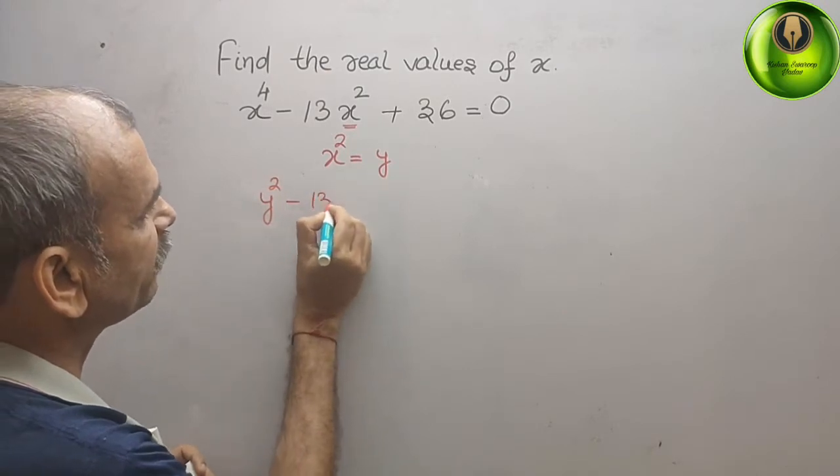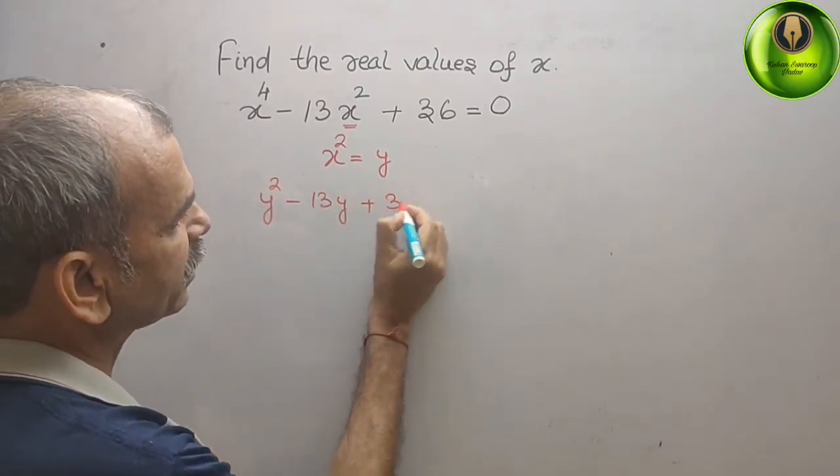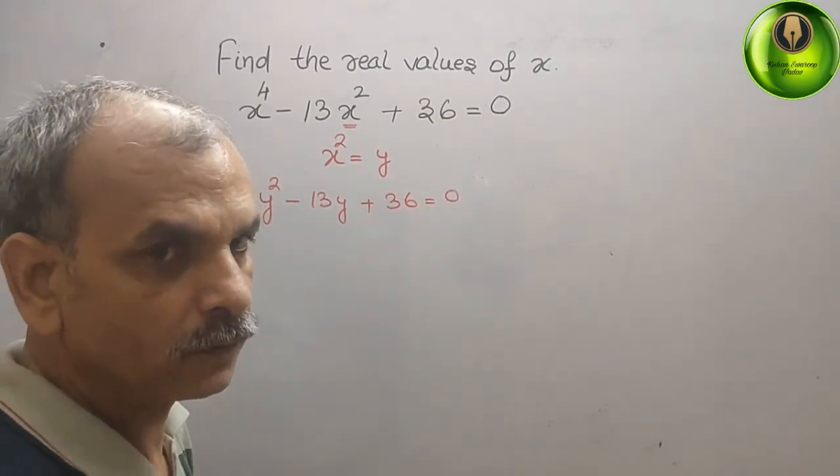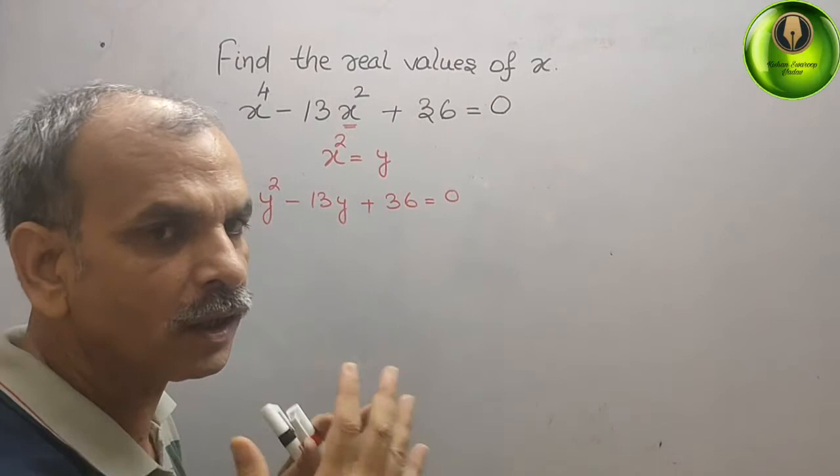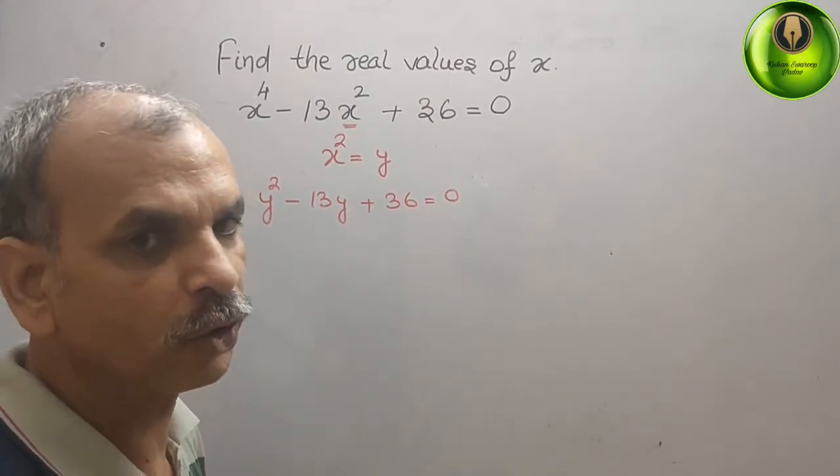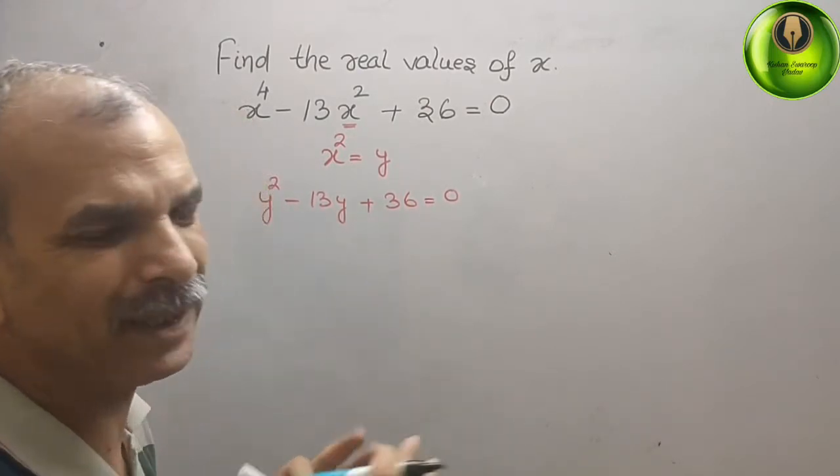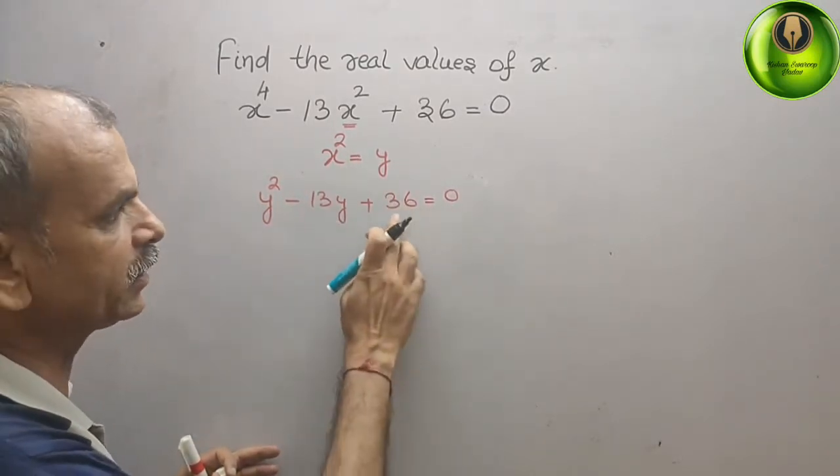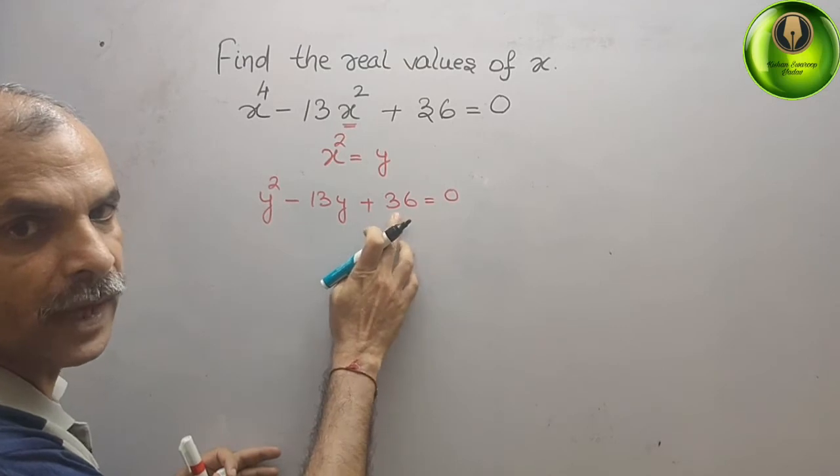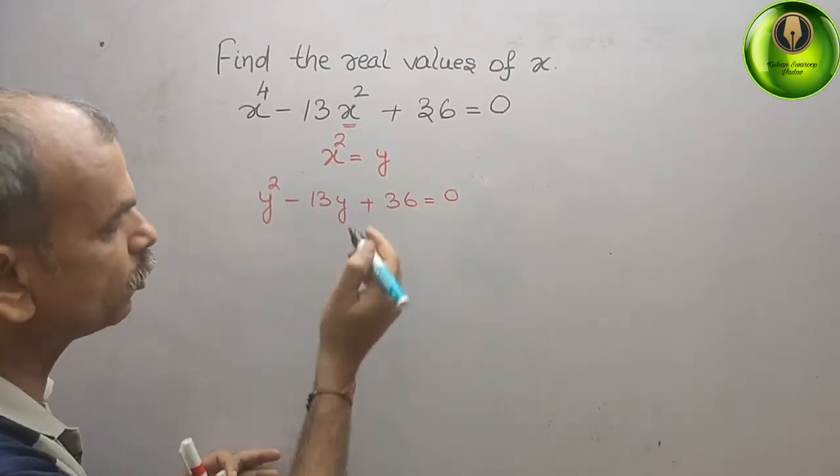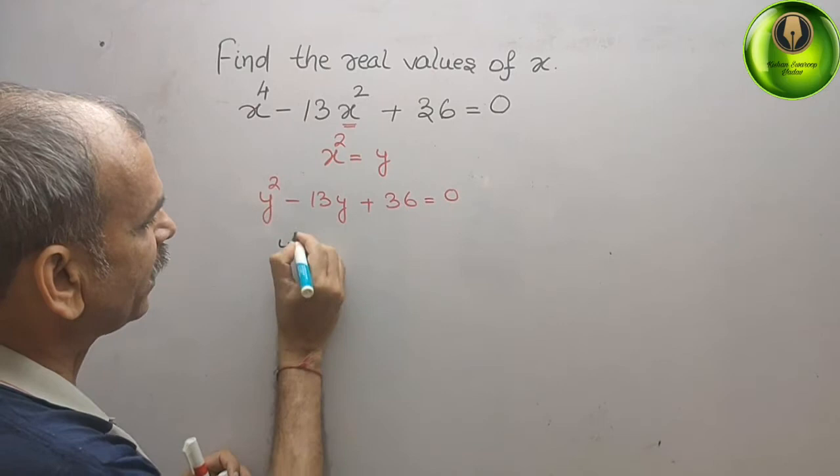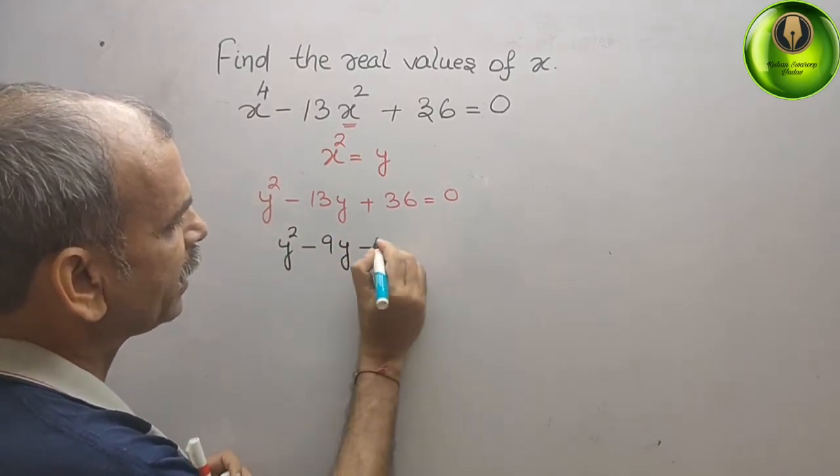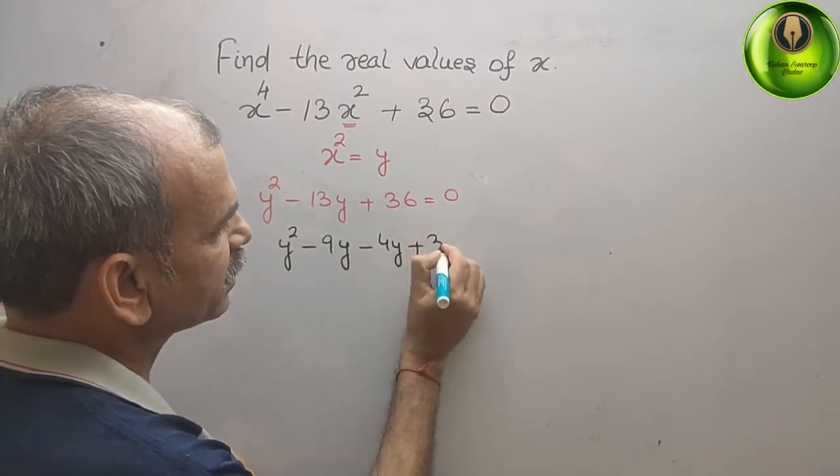minus 13y plus 36 that gives you 0. Now go for a middle term or other methods. We will go for a middle term. We know that 9 into 4 is 36 and 9 plus 4 is 13. So what we will write: y square minus 9y minus 4y plus 36...